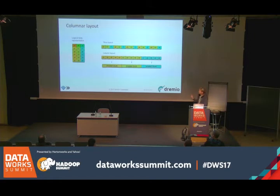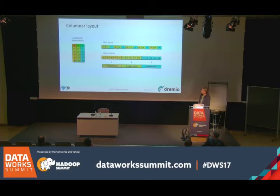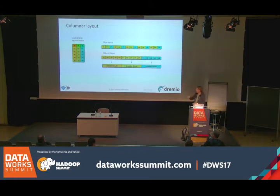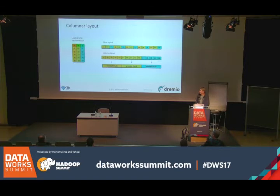The other aspect is when you query data, you usually have many columns — tens, dozens, hundreds, sometimes thousands — but when you analyze it, you're looking at only a few. When you do a select A, B, group by C, you need to read only those columns. In the column layout, that's easy — you seek to the beginning of a column and scan all the values at once. In the row layout, you need many small seeks and small scans, which is much less efficient. The whole I/O system works much better by scanning big chunks.